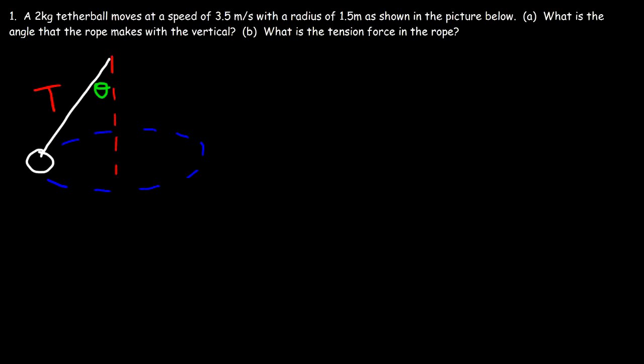A two kilogram tetherball moves at a speed of 3.5 meters per second with a radius of 1.5 meters. As shown in the picture, what is the angle that the rope makes with the vertical and what is the tension force in the rope? Let's draw a free body diagram. This ball has a weight force mg and it has a tension force T.